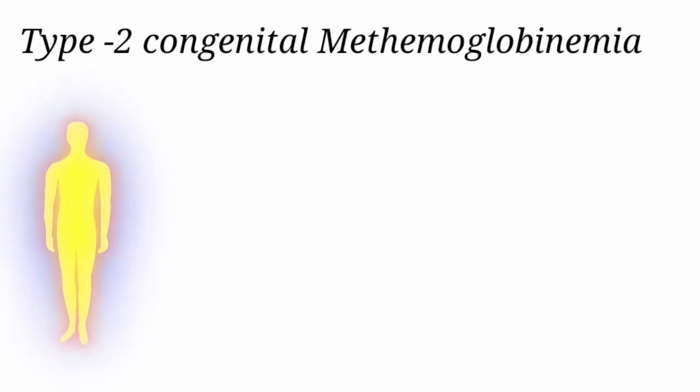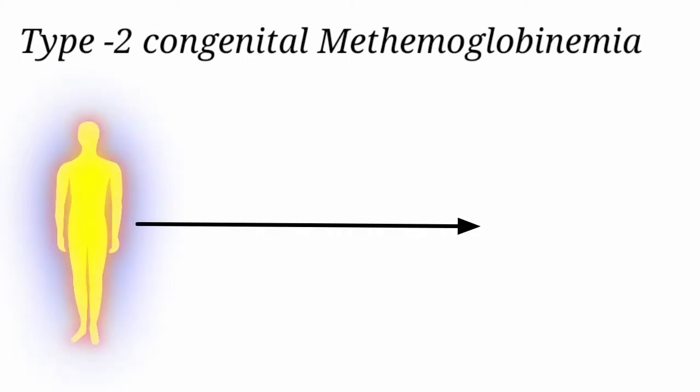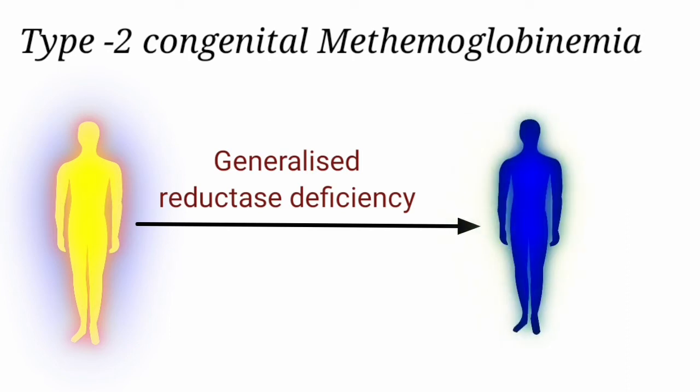Coming to type 2: in this type, there is a defect in the non-erythrocyte cytochrome B5 reductase enzyme, so the defect is present in all tissues — it is a generalized reductase deficiency. Type 2 is much more severe. The cyanosis is accompanied by neurological dysfunction, which includes intellectual deficit, microcephaly, growth retardation, and hypertonia.